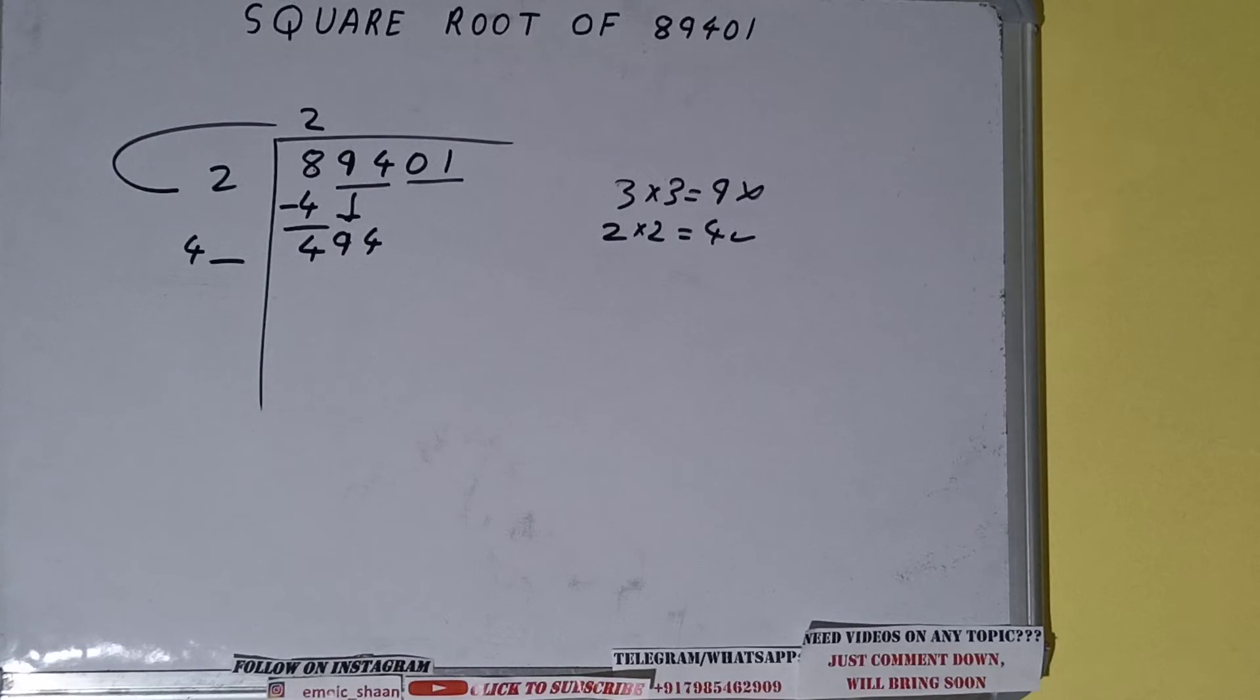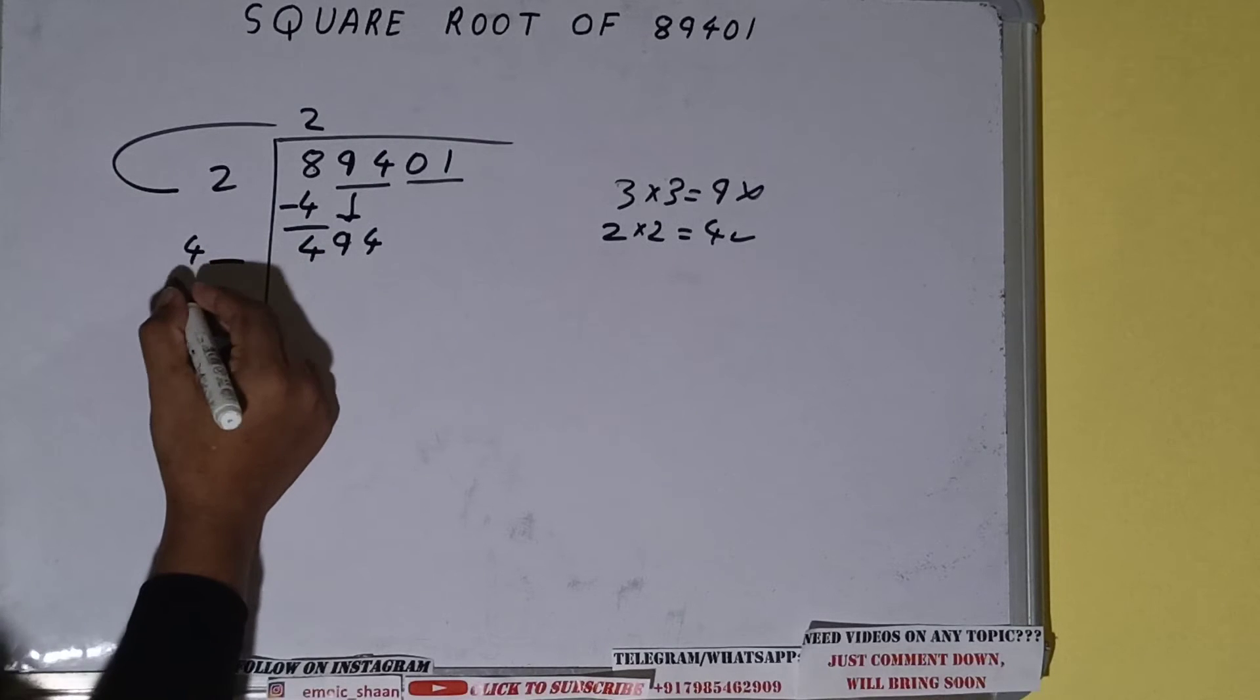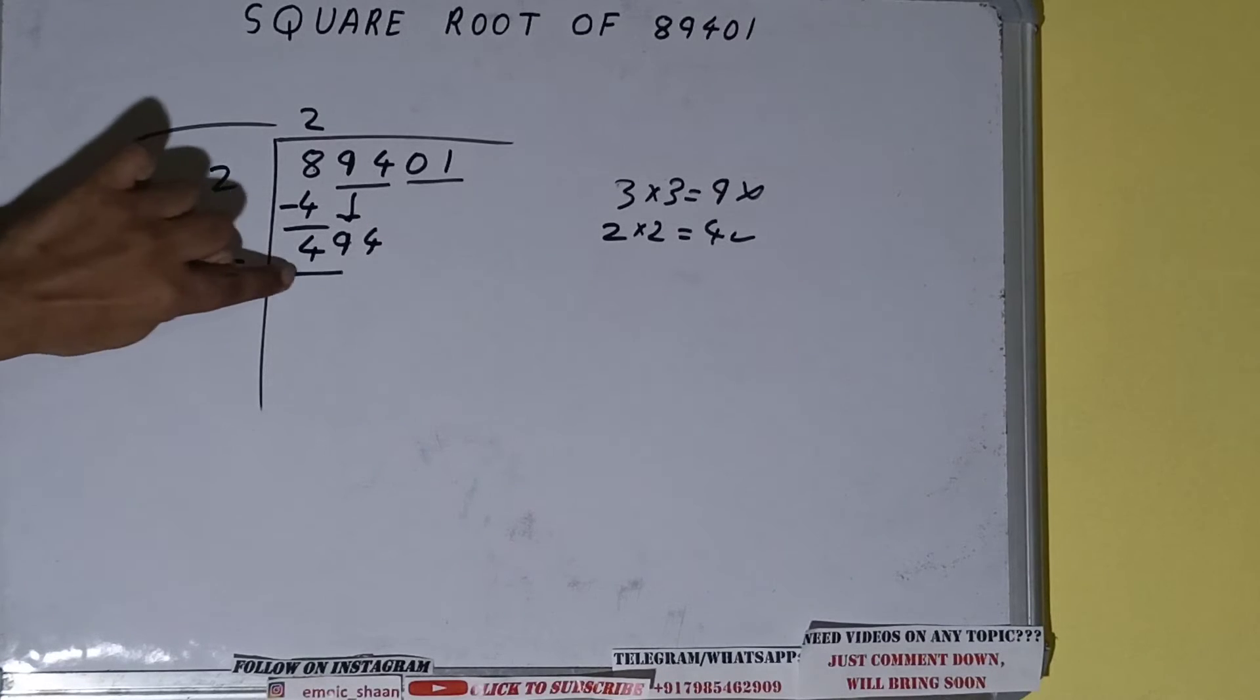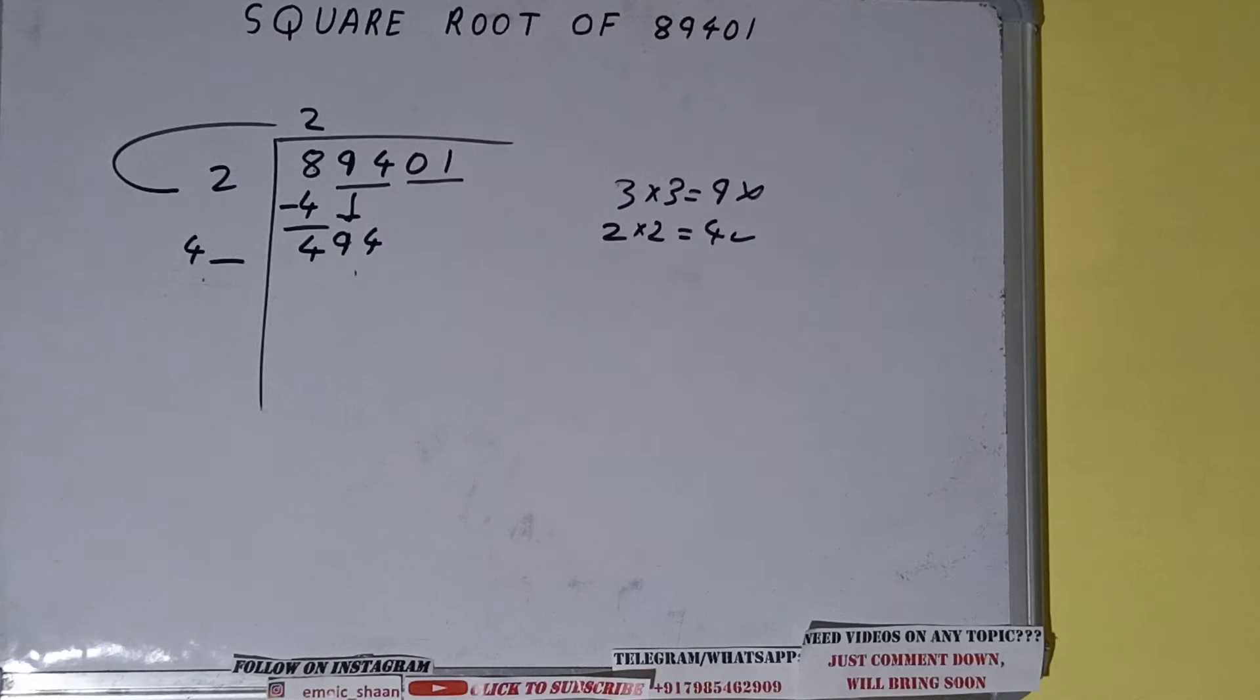Now whatever number we write here, we have to write here also. Or we can compare this 4 and 49. So 4 12 times is 49, right, but we have only one digit space so we'll try 9 times.